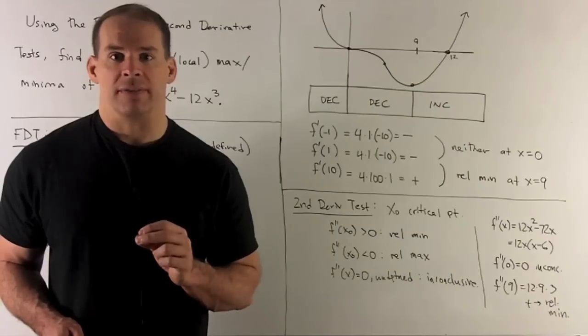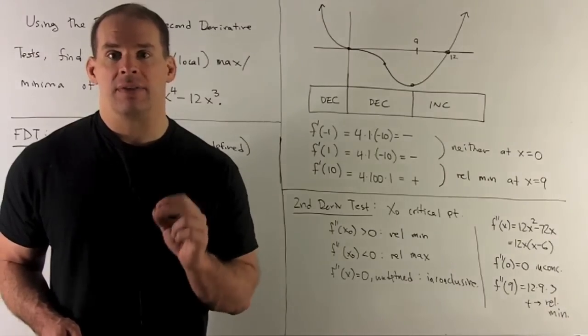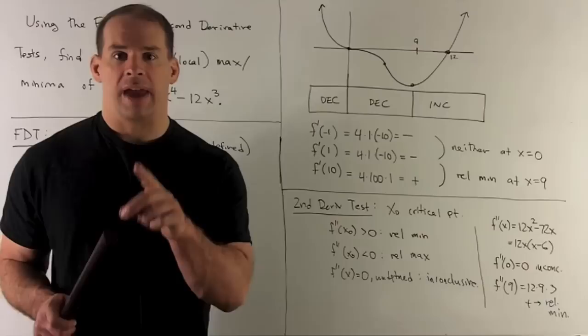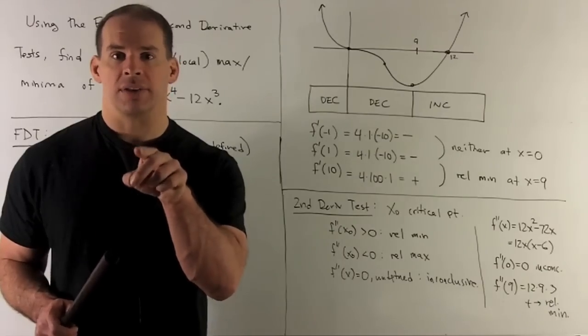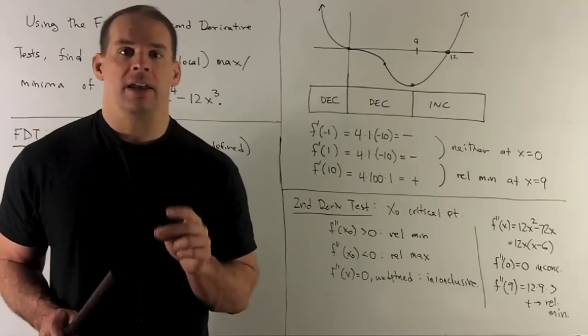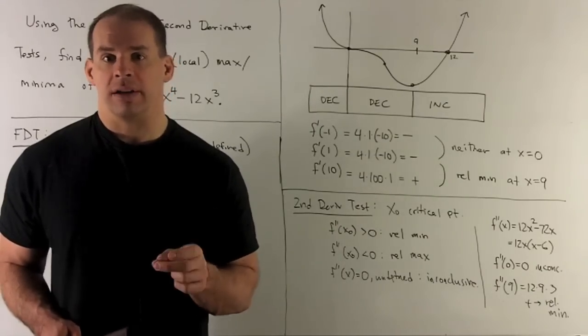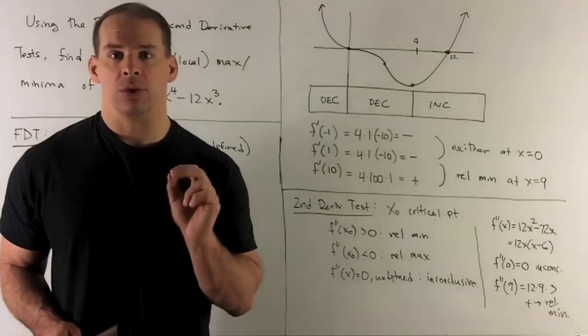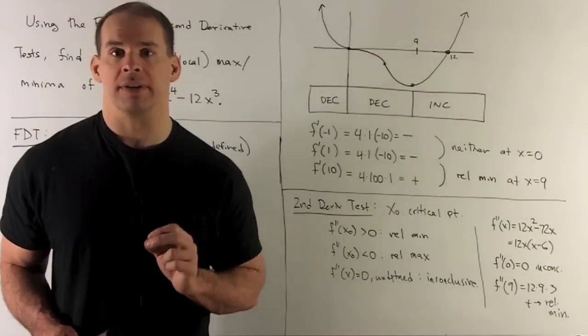If, when I apply the second derivative to x0, I get a negative number, I have a relative maximum. There, we're concave down, so you're at the top. And then, if I get 0 or undefined, inconclusive, I need to do more work. Usually that's going back to the first derivative test.